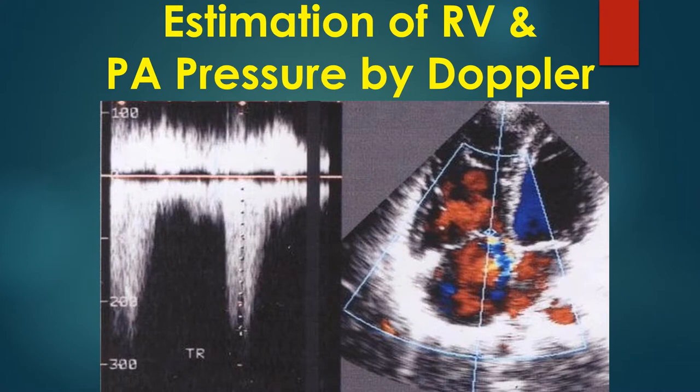The Doppler line is seen crossing the uppermost portion of this jet. The Doppler spectral tracing is seen in the left panel. It is a tongue-shaped jet and the peak velocity is measured using the cursor.